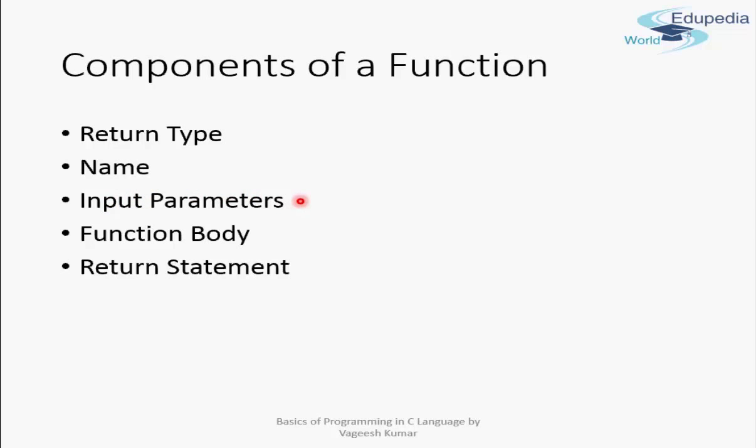Third are the input parameters. A function takes certain input, does some processing, and returns output. The input parameters specify how many inputs will be taken and their data types. For example, if you are adding two numbers your input parameters will be integers, and if you are reversing a string your input parameter would be a character pointer.